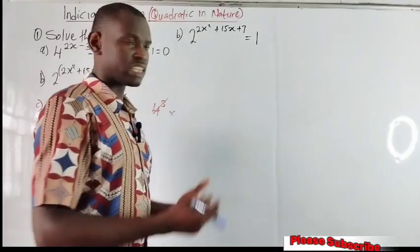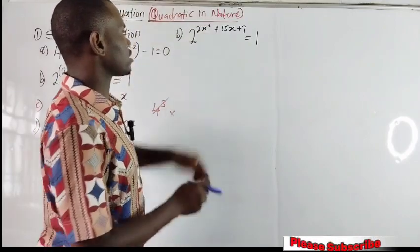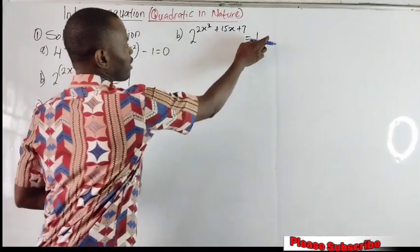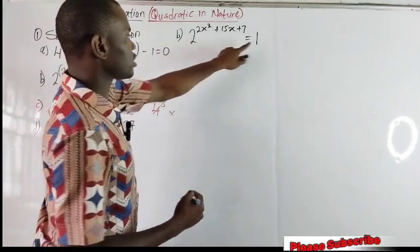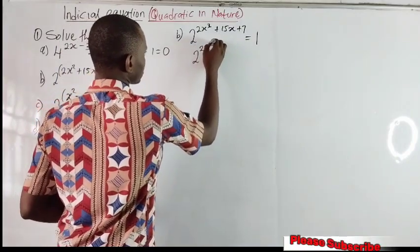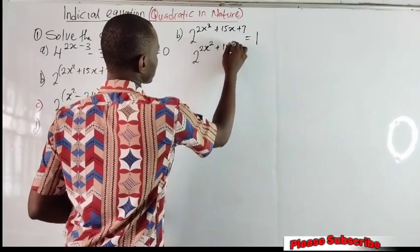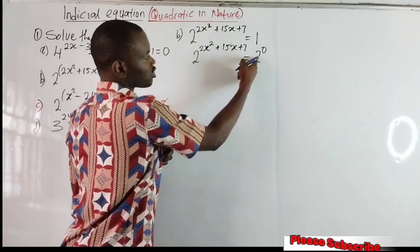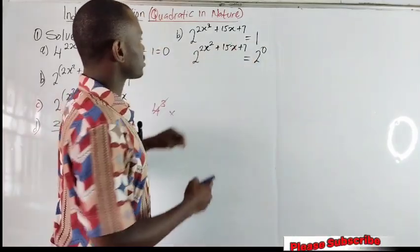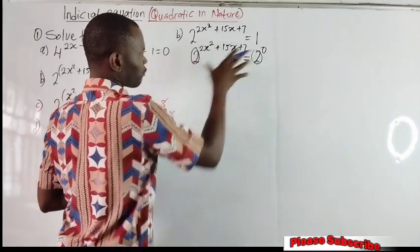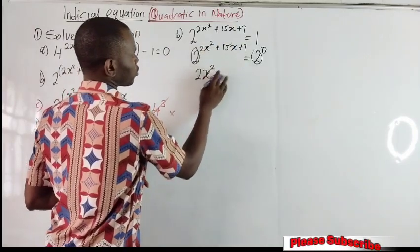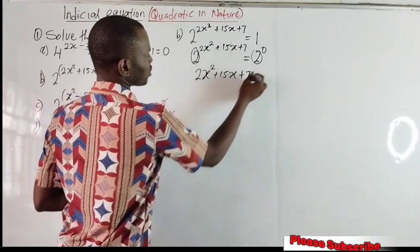Let's go to the second equation. To solve the second equation, we discover that the power is already a quadratic, since we have a power of 2 in the exponential function. If I can get both bases to be equal, I will then equate the powers. I'll have 2 raised to the power of 2x squared plus 15x plus 7, equal to 2 raised to the power of 0, since 2 raised to the power of 0 is 1 — any number raised to the power of 0 is 1. That is one of the laws of indices. The two bases are now equal.